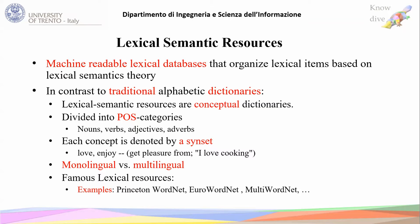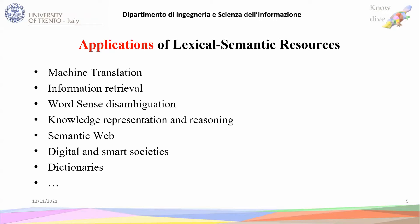Monolingual resources map lexical items in one language, but multilingual resources map between lexical items in different languages. For example, a monolingual resource is Princeton WordNet, and multilingual lexical semantic resources include UKC, EuroWordNet, and MultiWordNet. Some applications of lexical semantic resources are machine translation, information retrieval, word sense disambiguation, semantic web, and others.